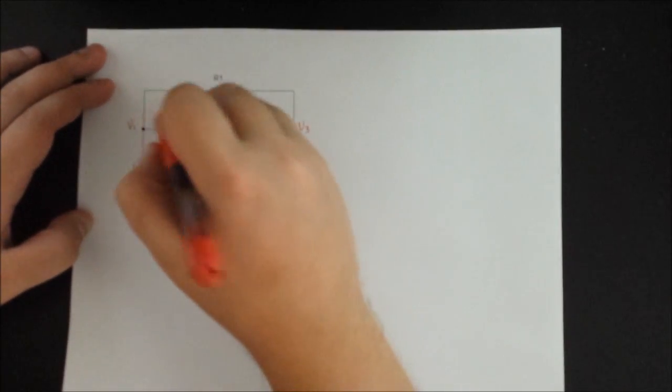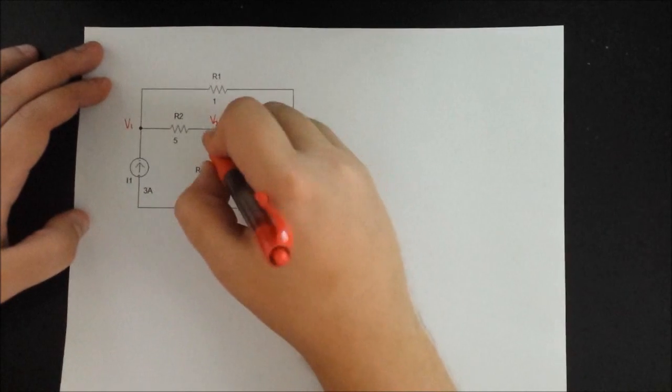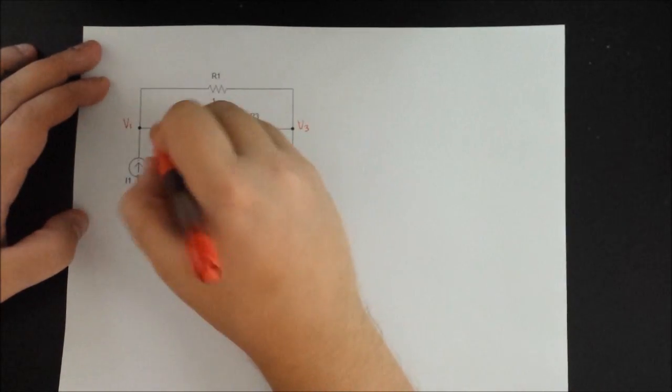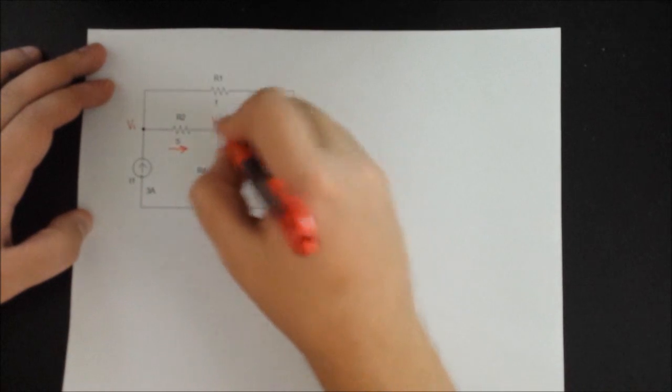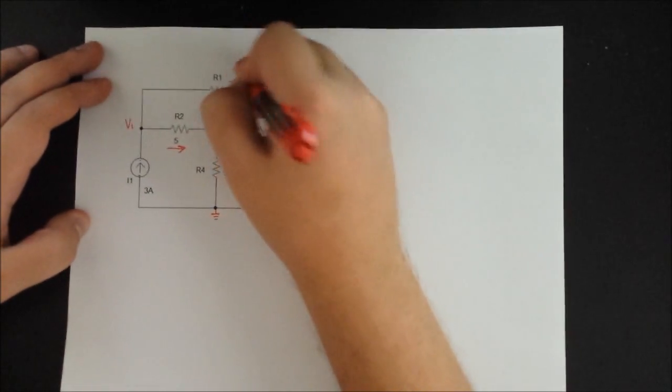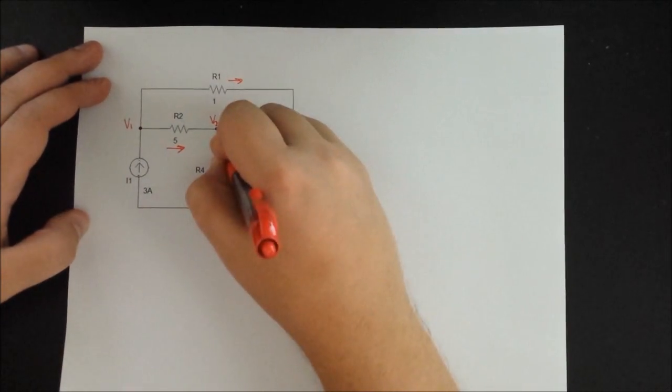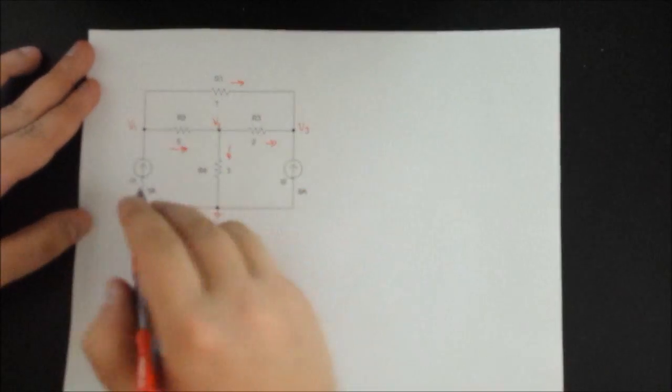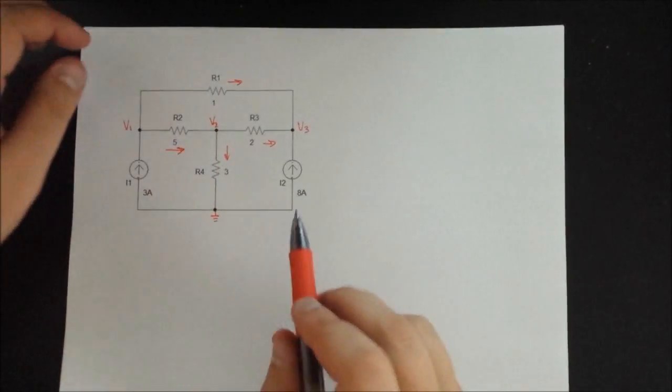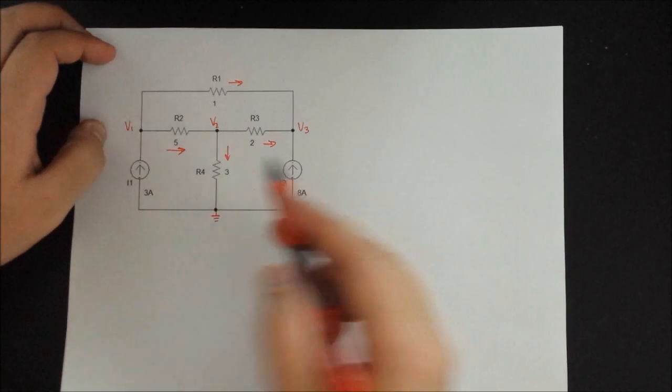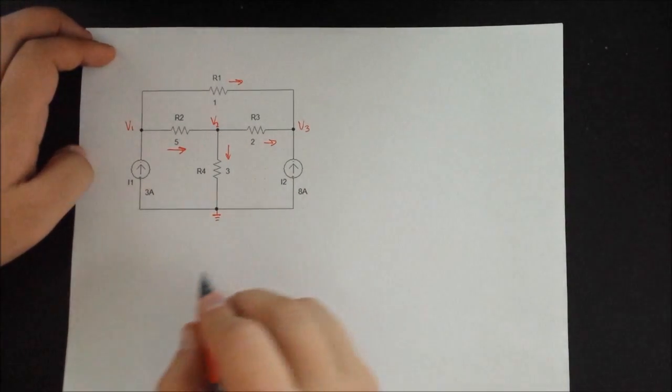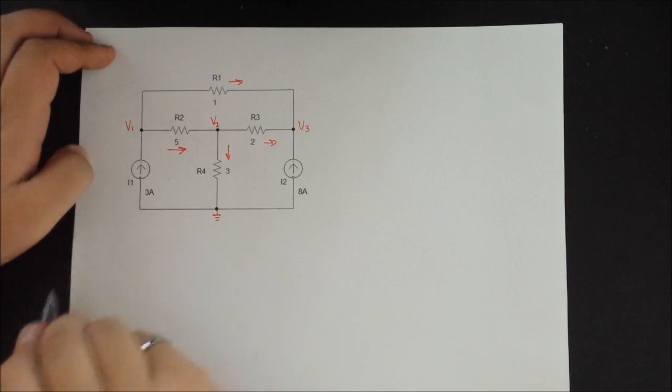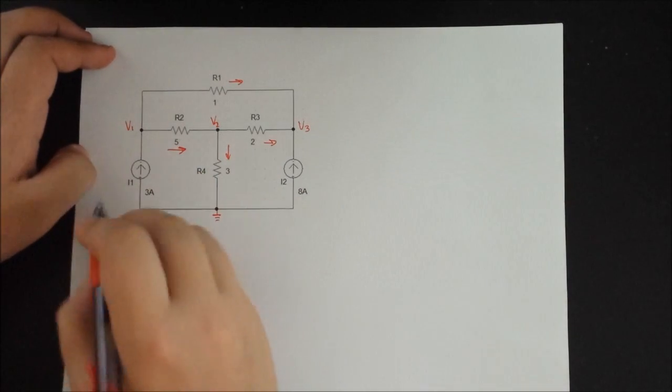The third step is identifying the currents in the branches. So I like to do it from left to right. So we have a current through this resistor, we have a current through this resistor, this one and finally this one into the ground. The current sources obviously give you a direction for the currents. So we're going to start by writing the current analysis at each one of the nodes.